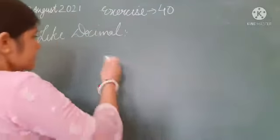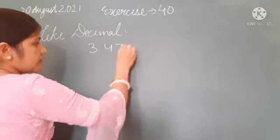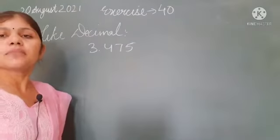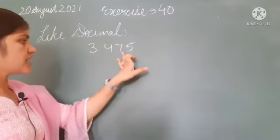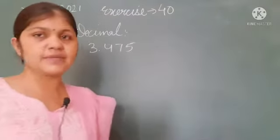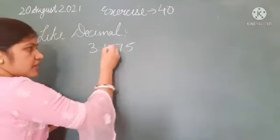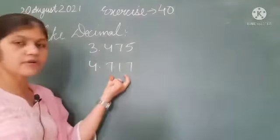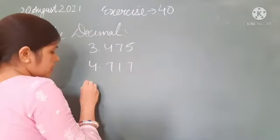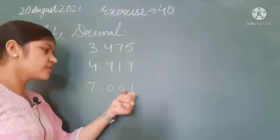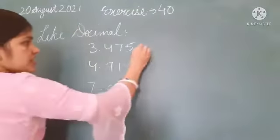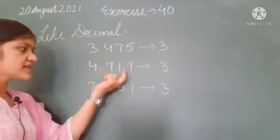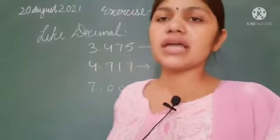For example, I have written the number 3.475. The decimal places are 1, 2, 3 — so three decimal places. And here we have another number with three decimal places, and another with three decimal places as well. So the decimal places are the same here — this is similar, this is 'like.'